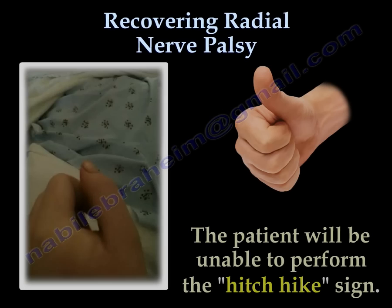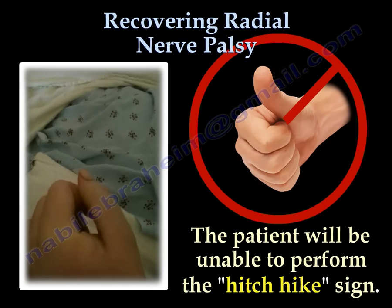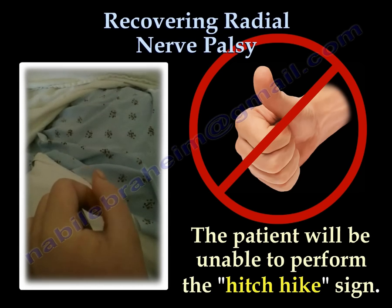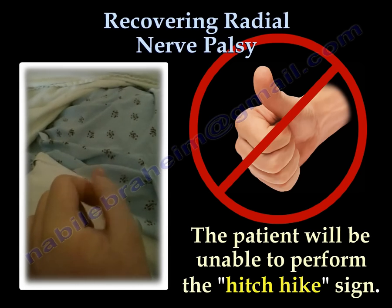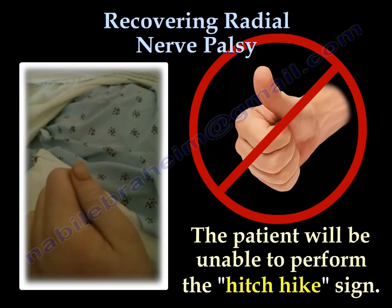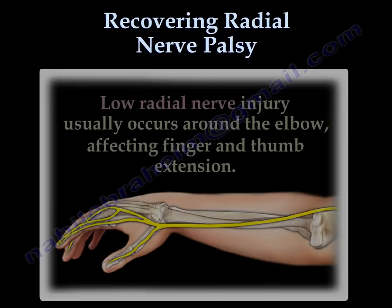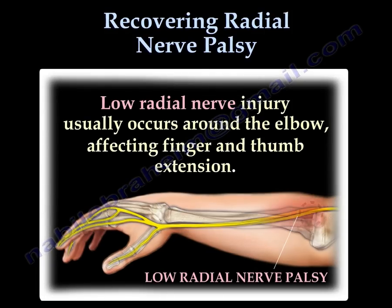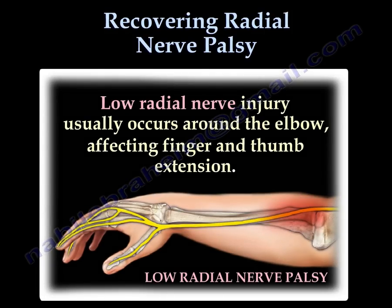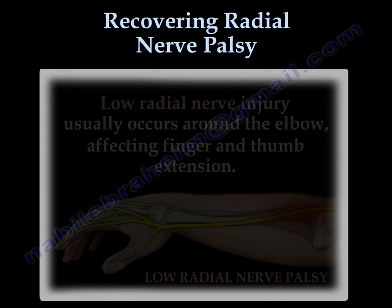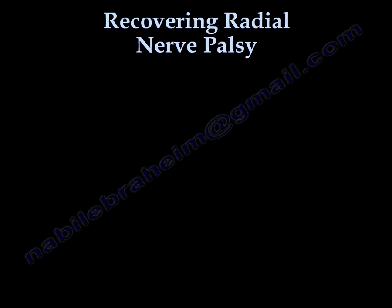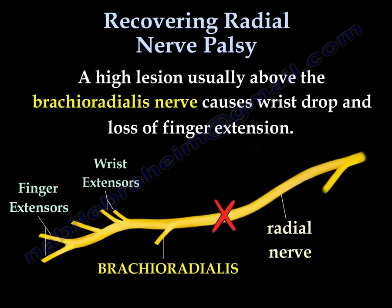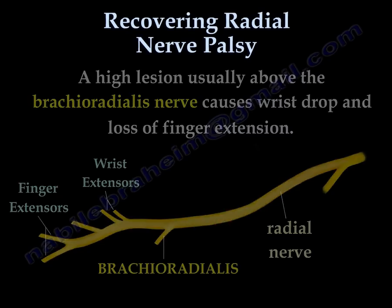The patient will not be able to perform the hitchhike sign. Low radial nerve injury usually occurs from trauma around the elbow, affecting finger and thumb extension. A high lesion, usually above the brachioradialis nerve, causes wrist drop and loss of finger extension.